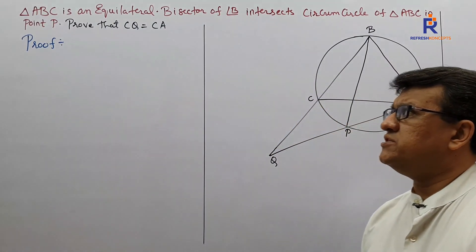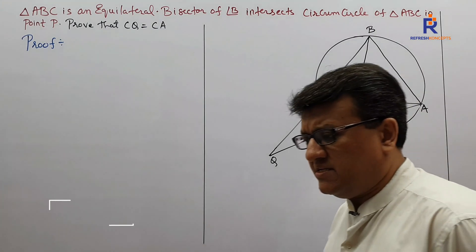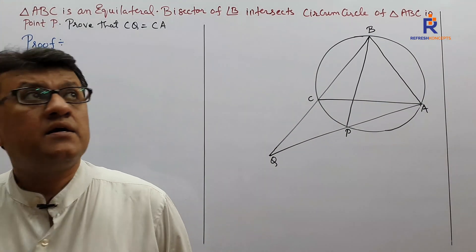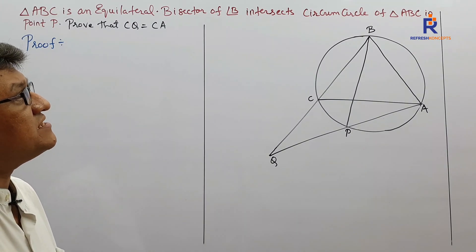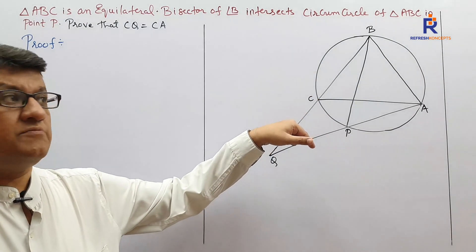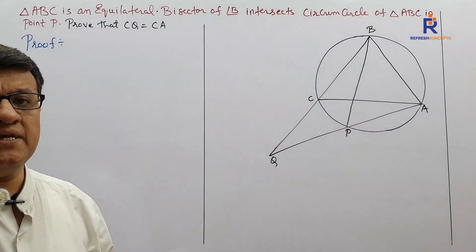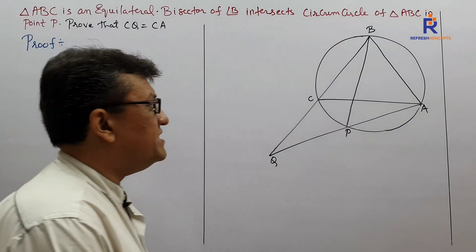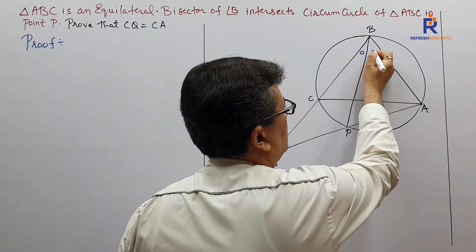Let's check one more interesting sum. Triangle ABC is an equilateral triangle. The bisector of angle B intersects the circumcircle of triangle ABC at point P. In short, BP is the angle bisector of angle CBA.